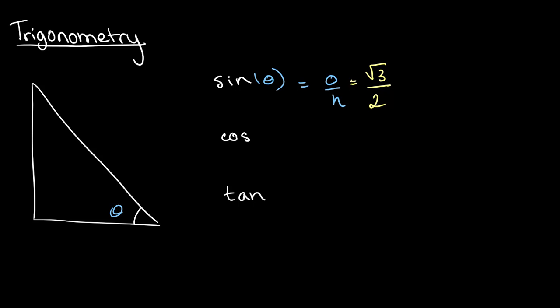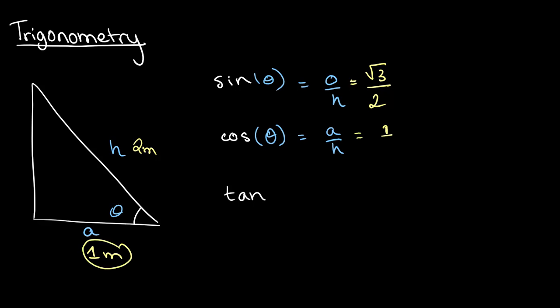Cosine acts in a way very similar to sine. If we take cosine of theta, what we get is A over H, where A stands for the length of the adjacent side — the side adjacent or right next to theta — and H is our hypotenuse. For example, if the length of the adjacent side is 1 meter and the length of the hypotenuse is 2 meters, then cosine of theta equals A over H, which is 1 over 2.